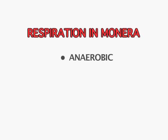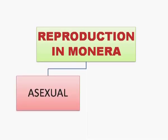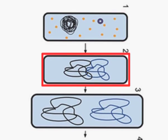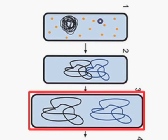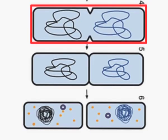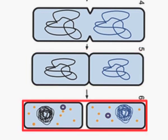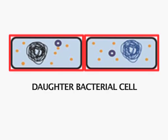Reproduction in these Monorans is by both asexual and sexual methods. As you can see in the figure, the asexual method of reproduction takes place by binary fission. The DNA replicates first, and as the DNA is replicating, the bacterial cell starts growing and enlarges in size. Once DNA replication is complete, the two DNA copies move to the two opposite poles of the bacterial cell. A constriction appears in the middle and deepens, finally resulting in the formation of two bacterial cells which separate from each other. Each one is a daughter bacterial cell with its own DNA, capable of independent existence.